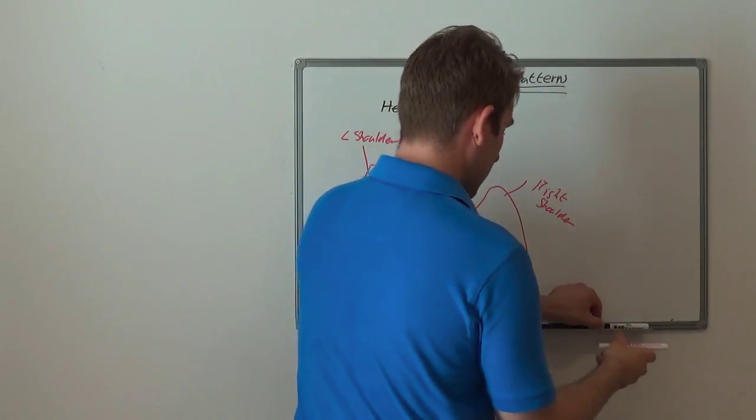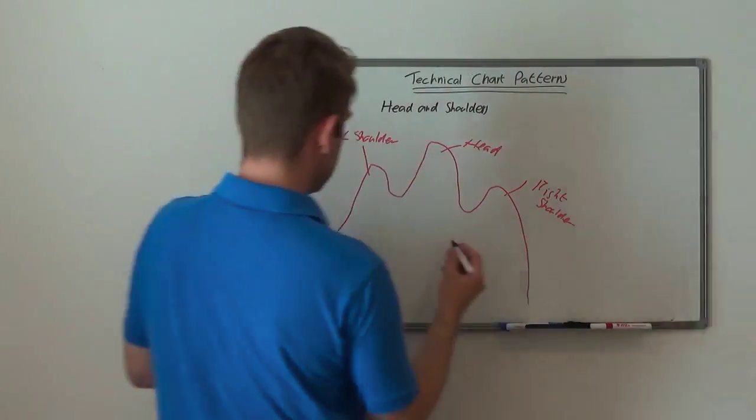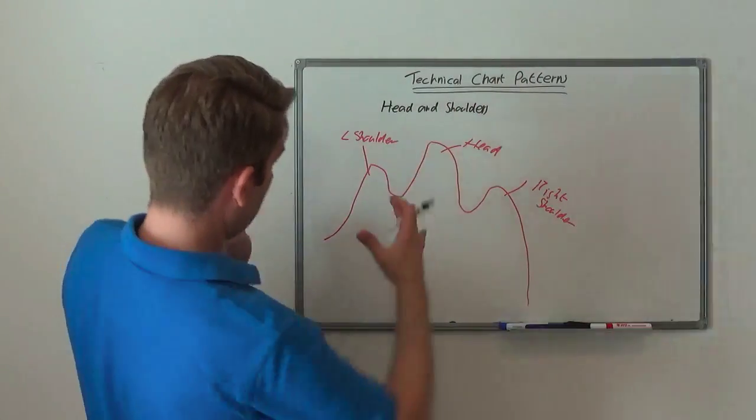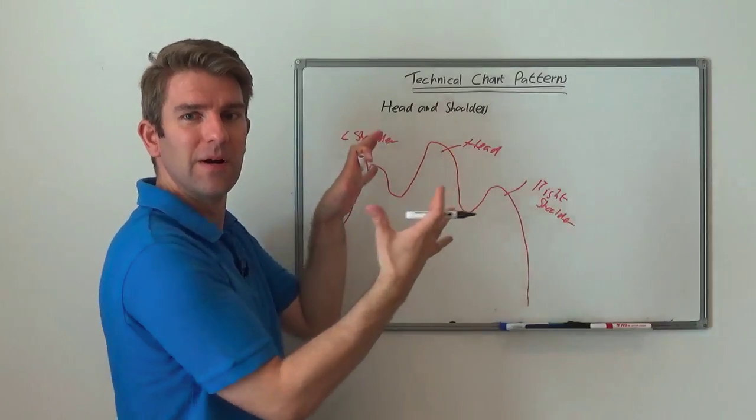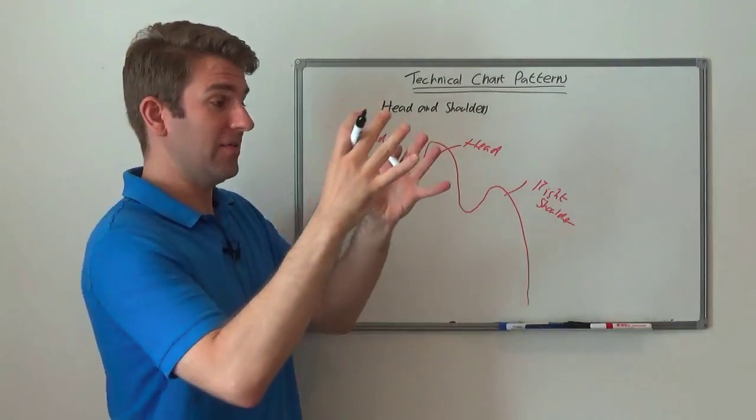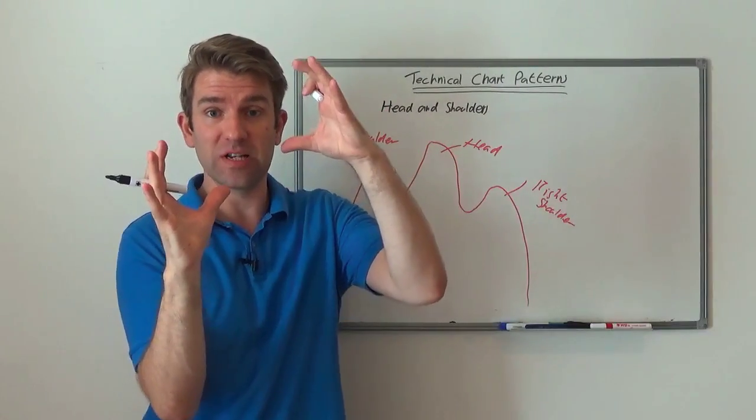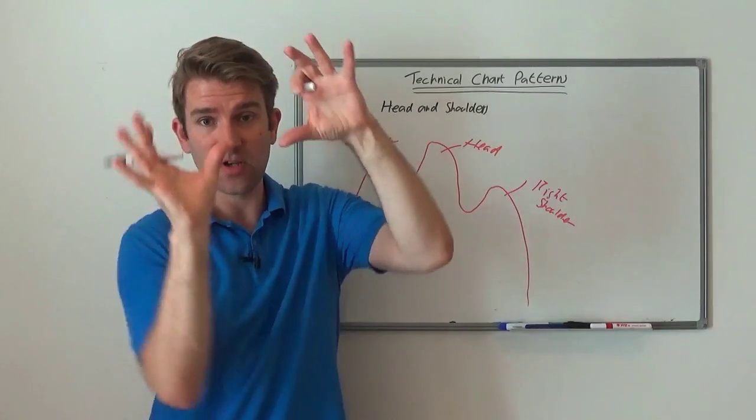Now the important thing here also to add is that I've kind of done it on a bit of an angle here but it should really be straight. But in the real world you're often going to get it kind of pivoted like that, so you get your shoulder, your head. So it may well be angled, maybe angle like this. It may not be symmetrical.